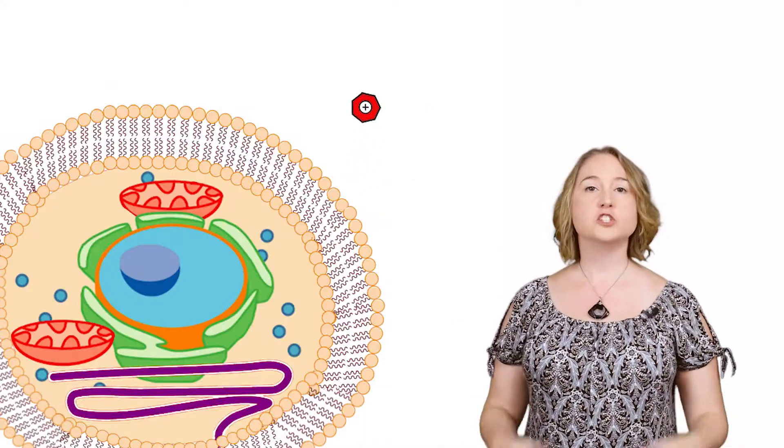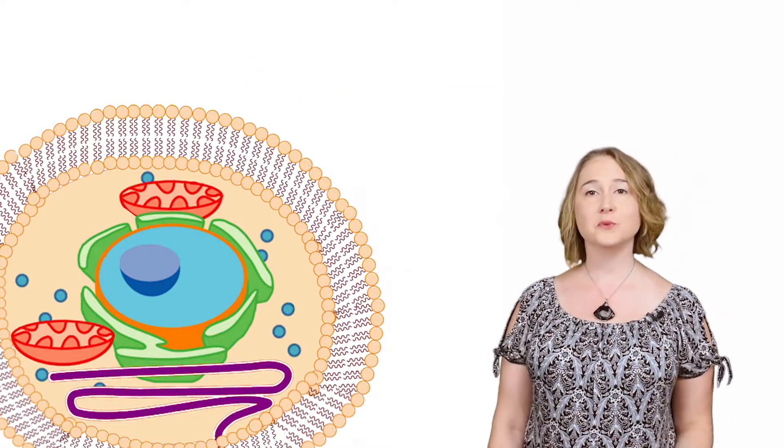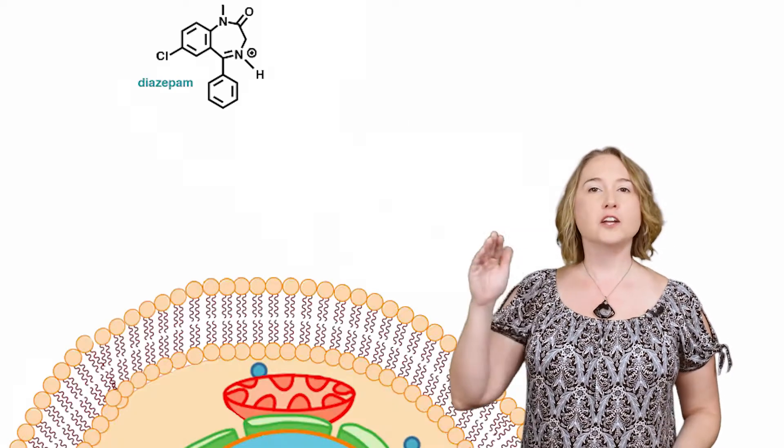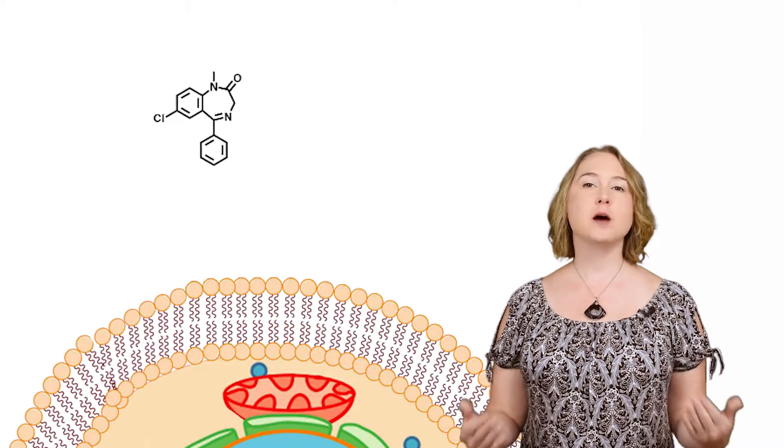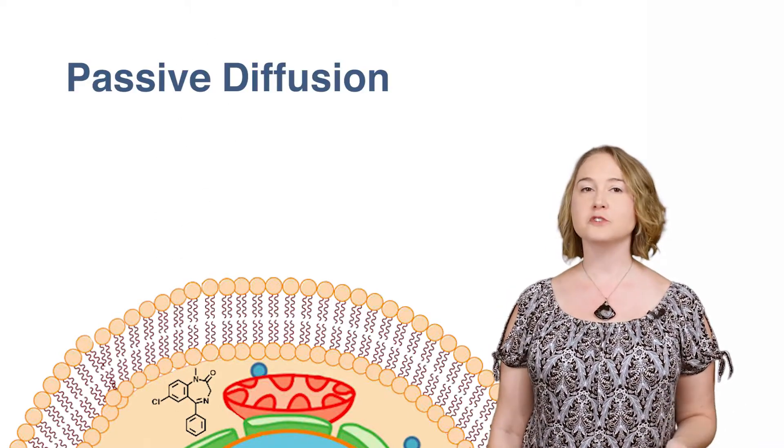If something is charged, it's harder for it to interact with the greasy lining of the cells and pass through them. But once a drug moves into the less acidic, higher pH environment of the intestine, it becomes uncharged and can absorb by what we call passive diffusion.